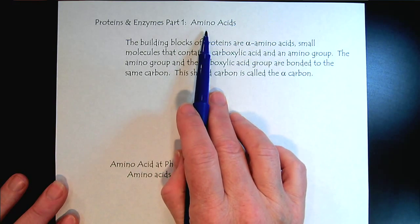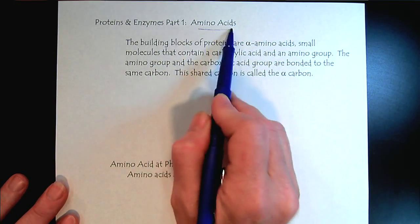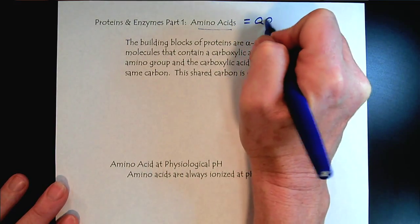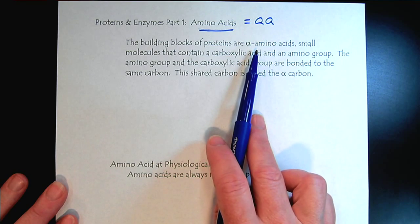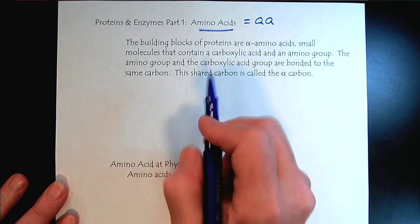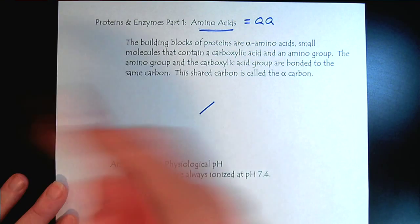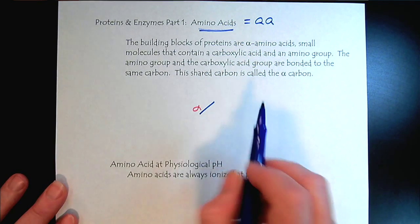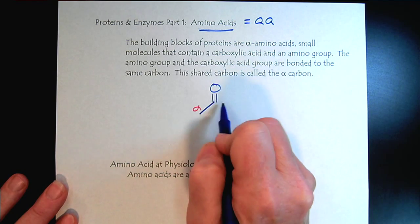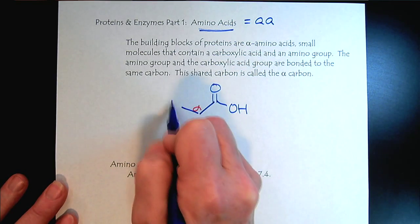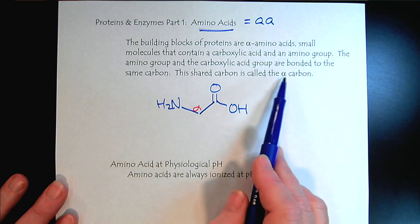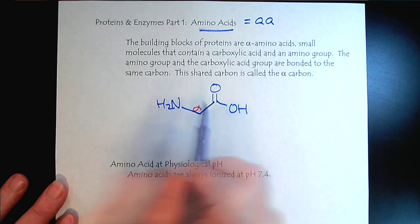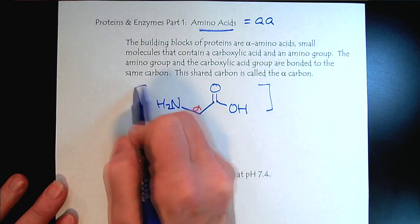The major building block of proteins and enzymes is amino acids — we'll abbreviate that as AA. Specifically, they're alpha amino acids. What that means is we have a carbon called the alpha carbon, and the carboxylic acid and the amine are both bonded to that same alpha carbon. These features are the same for every amino acid.